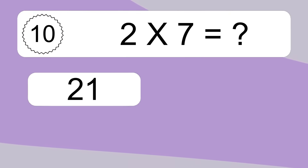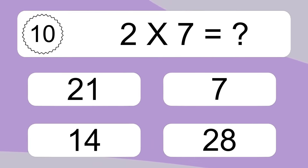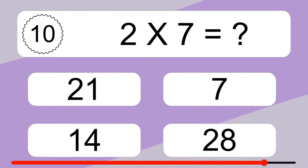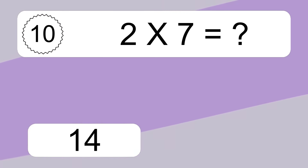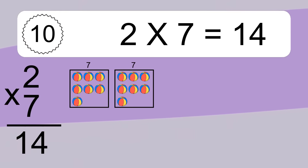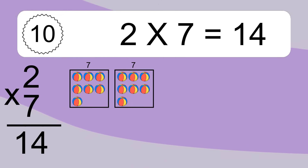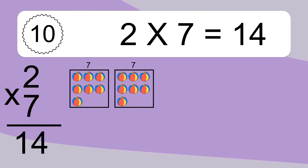2 times 7 equals what? 2 times 7 equals 14. We have 2 boxes and each box has 7 colorful balls inside. If you count all the balls in all the boxes together, you will have 2 times 7 balls. This equals 14 balls.